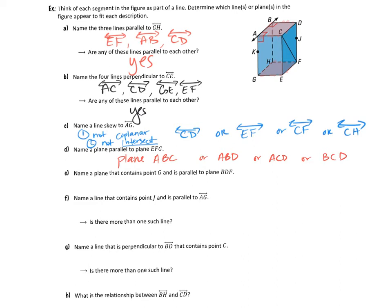Part E asks us to name a plane that contains point G and is parallel to plane BDF. BDF forms the back wall of the box, so we want the front face, which contains G. Any three points from A, C, E, G, or K will work. For example, plane ACE. Any combination of three from those five points is a correct answer.